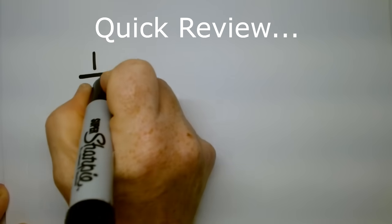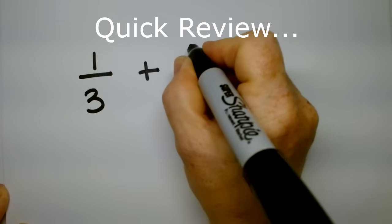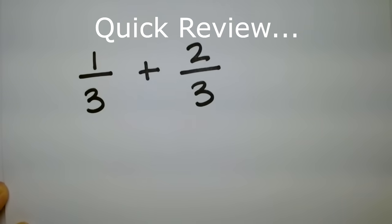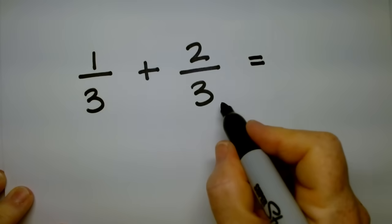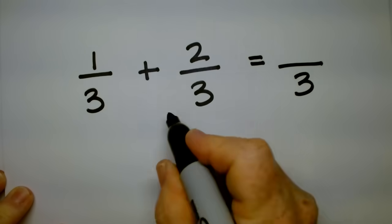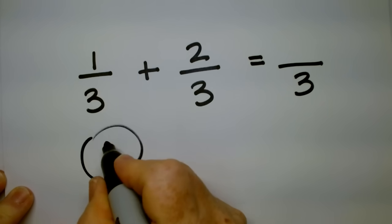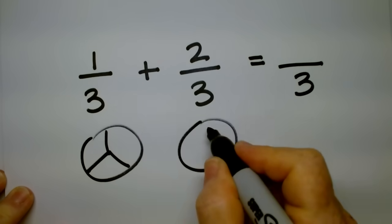So if I said one-third plus two-thirds, do the bottoms match? Yes, they do. So what that means is I am simply going to bring this over. We don't add the bottoms because that wouldn't make any sense. Watch.